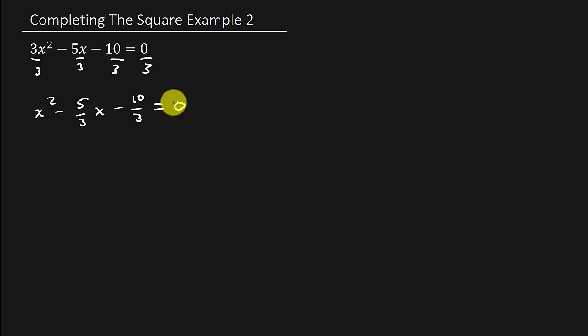And so now we're ready to complete the square. But the first thing we need to do is we need to move the constant term to the other side. You can go over to the side here. You can take the middle term, the 5 thirds, and you half it.